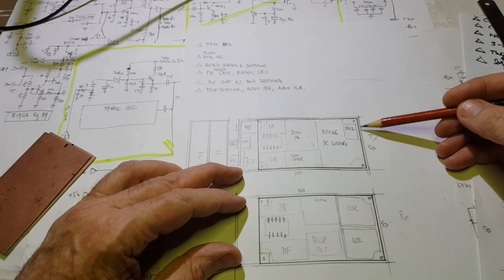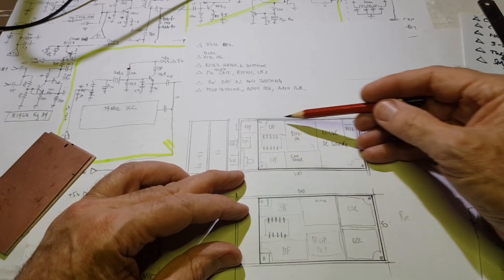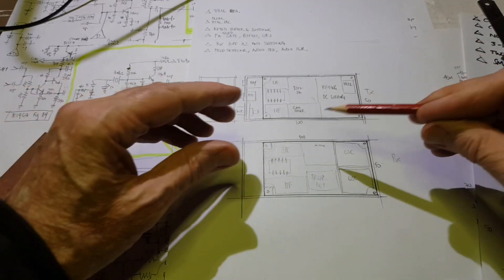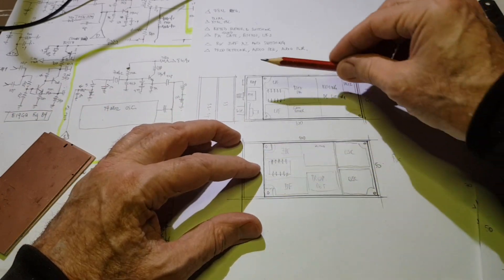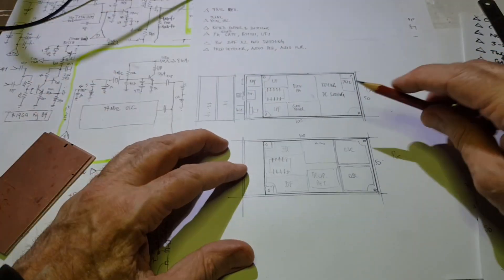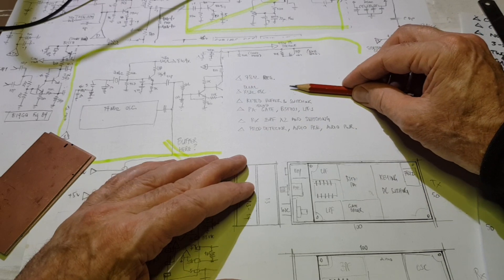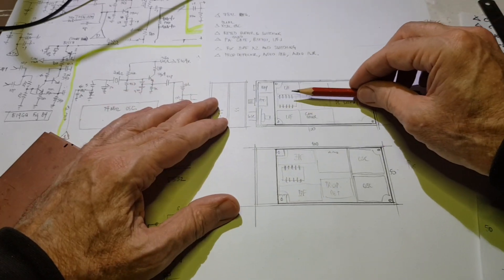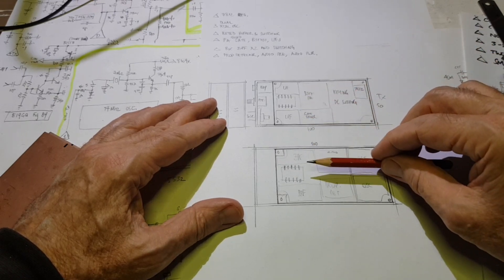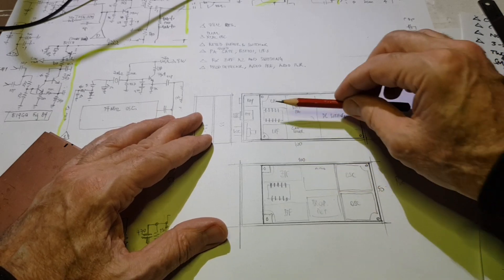At this point, this arrangement becomes a template. Now the challenge for me is to work out, assuming I have a base board and a top board, the boards are going to be sandwiched, overlaid. Can I fit all the parts of this two-band CW transceiver onto the real estate, onto the area that is on offer if I work with these dimensions?